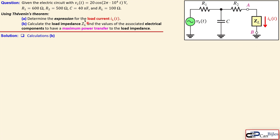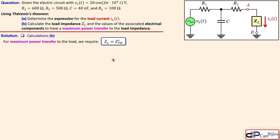Now for question B: we need to calculate the load impedance ZL for maximum power transfer. The circuit has changed — we must determine ZL and its component values. For maximum power transfer, the load impedance must equal the complex conjugate of the Thevenin impedance: ZL = ZTH*. Since ZTH = 683 − j276 ohms, taking the complex conjugate reverses the sign of the imaginary part.